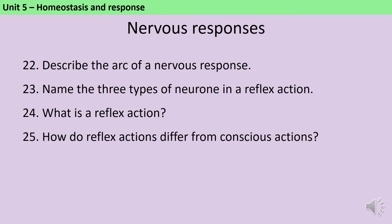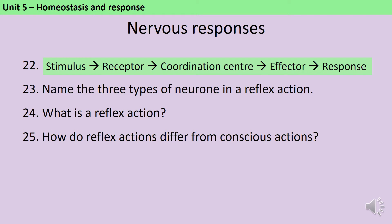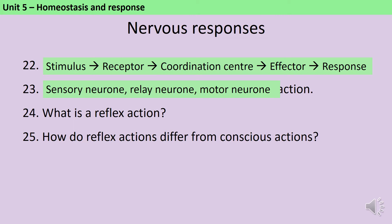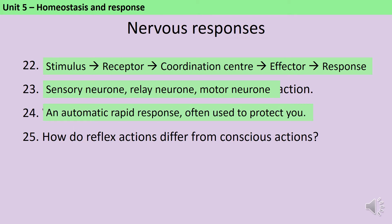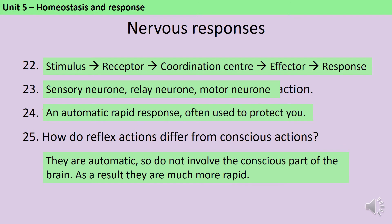In order to respond to any change in the environment, there's firstly a stimulus which is detected by a receptor. This passes information to a coordination centre which triggers an effector organ to bring about a response. The three types of neuron are sensory neurons, relay neurons and motor neurons. A reflex is an automatic rapid response often used to protect you — something like blinking or snatching your hand away from a hot object. Reflex actions are different from conscious actions because they're automatic, so they don't involve the conscious part of the brain, and because they are much more rapid.